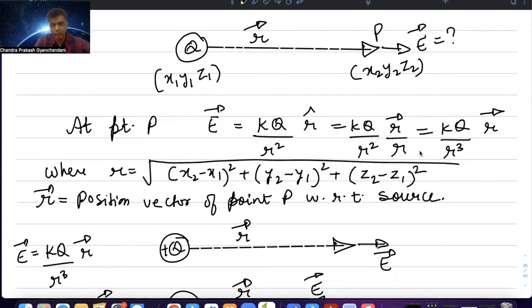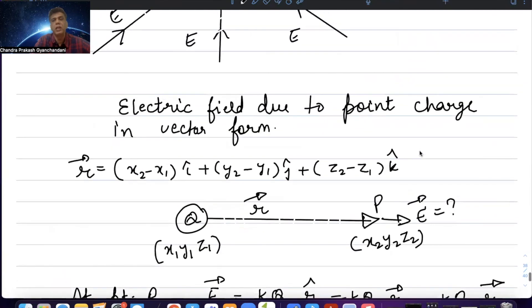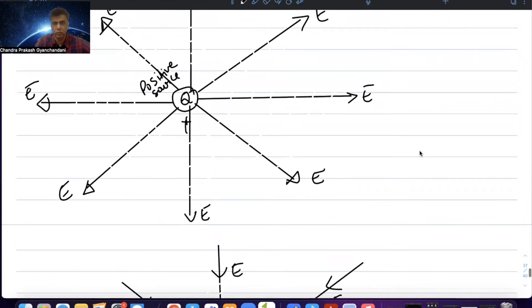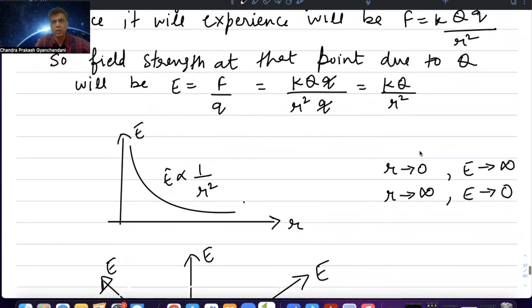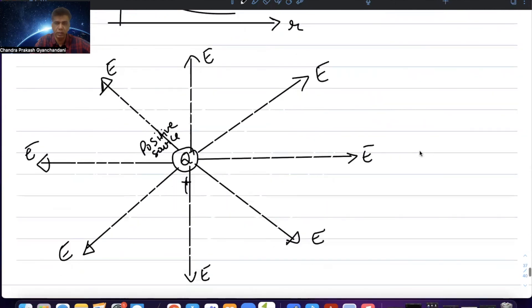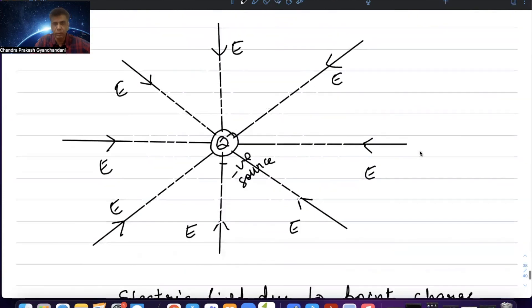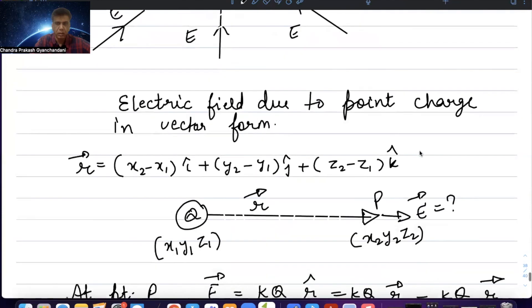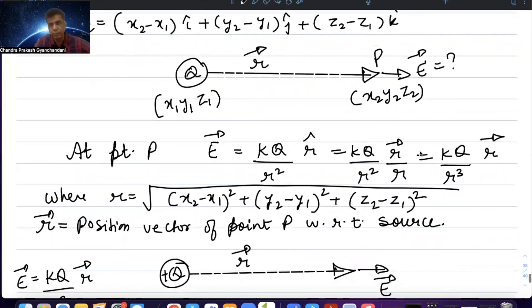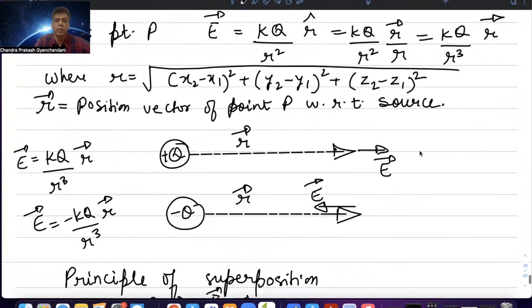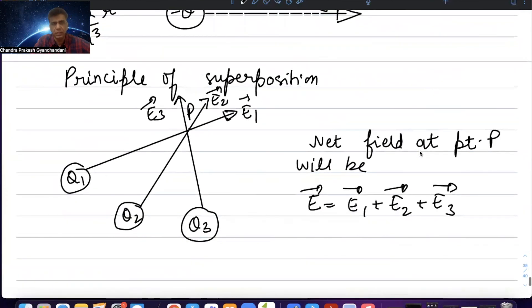So in this video, if the source is one charge, the formula is k Q upon r square. A positive source will produce a field away from it. If the negative source, it will produce towards it. In vector form, you can use these formulas when the charge position and point are given. We learned about the principle of superposition. Thank you so much for joining us, and we will see you in the next video.